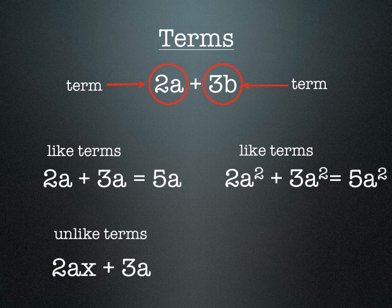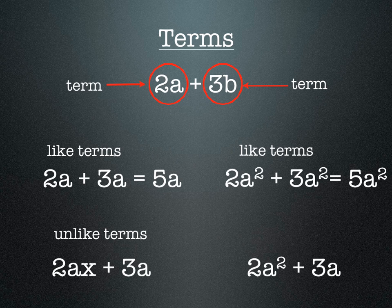So too with 2a² + 3a - even though they're all a's, the 2a² is different to the a, so we can't add them up and they are also unlike terms.